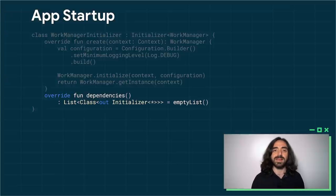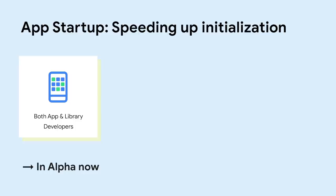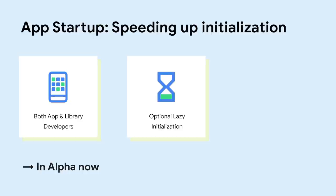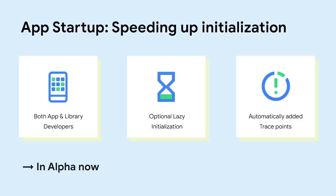The AppStartup library can be used by both application and library developers to streamline startup. It supports lazy initialization to further improve application startup performance by completely avoiding the content provider. It automatically adds trace points for every initializer, so you know the true cost of components being initialized at application launch using tools like Systrace and Perfetto. It's available as alpha today — try it out and see how your app launch performance improves.